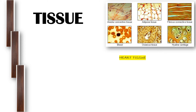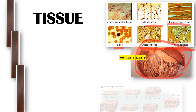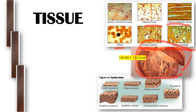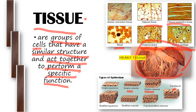The next level of biological organization is tissue. Examples include adipose tissue, fibrous connective tissue, hyaline cartilage, osseous tissue, and blood tissue. We also have heart tissue and types like simple squamous, simple cuboidal, simple columnar, and transitional tissues. Tissues are groups of cells that have a similar structure and act together to perform a specific function.